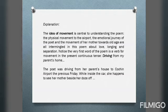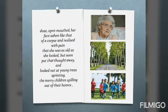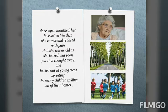Notice the first word of the poem — 'Driving' — it is a verb of movement in the present continuous tense. The poet was driving from her parents' house to Cochin Airport the previous Friday. While inside the car, she happens to see her mother beside her dozing off, open-mouthed, her face like that of a corpse. She realized with pain that her mother was as old as she looked, but soon put that thought away and looked out at young trees sprinting and merry children spilling out of their homes.